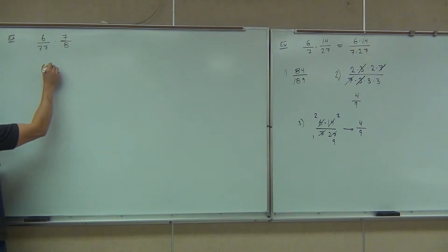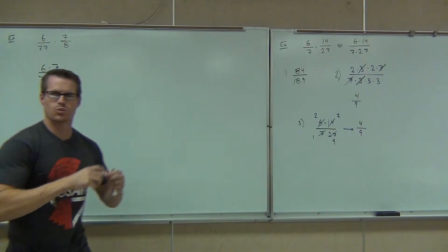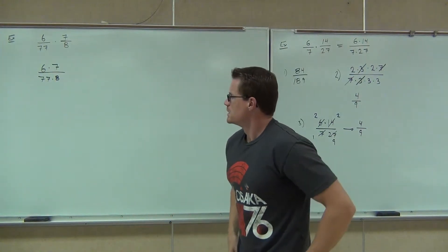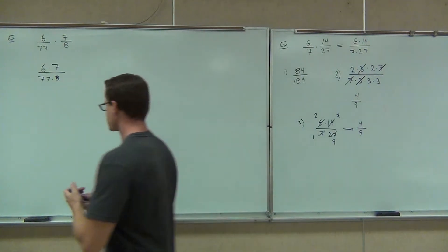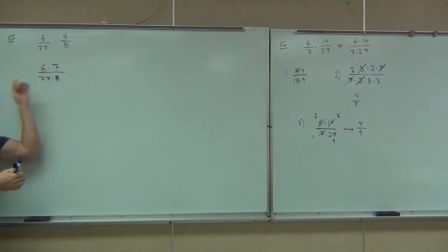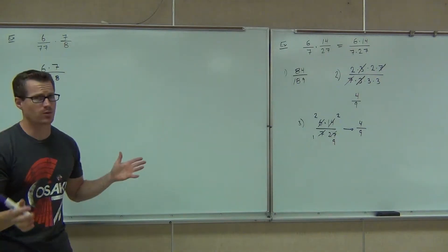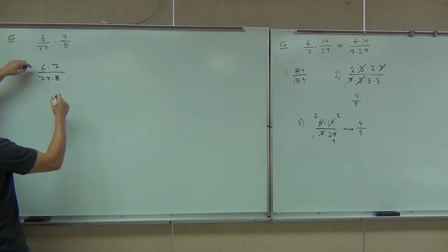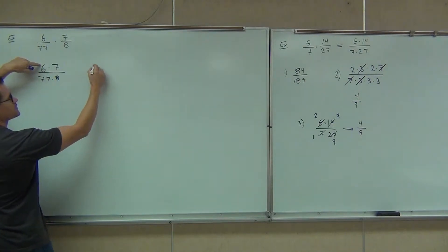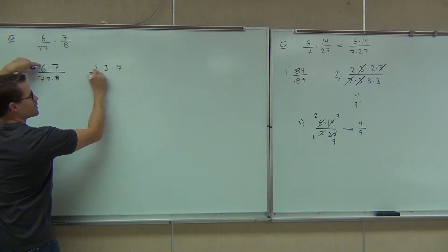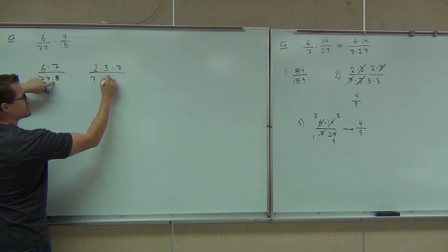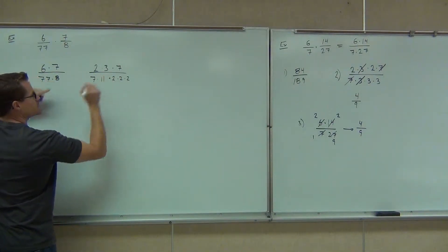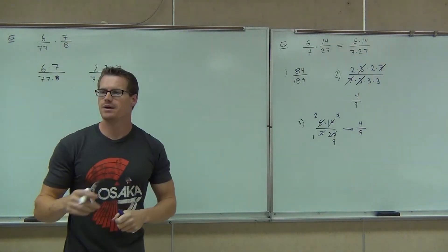First thing — I need to see 6 times 7 over 77 times 8. That's the only way we can simplify fractions: get them as one fraction first. Now there are two options. The first option is to write this out as a product of prime numbers. Instead of 6, we could do 2 times 3. 7 is already a prime number. Instead of 77, we could do 7 times 11. 8 is 2 times 2 times 2. And then we can simplify as we go.